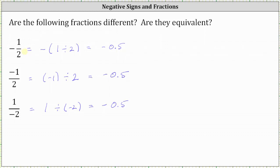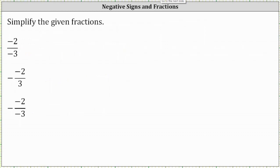Now let's take a look at simplifying some additional fractions with negative signs. First, we have negative 2 over negative 3, which means negative 2 divided by negative 3. We know a negative divided by a negative is equal to a positive, and therefore this simplifies to positive 2 thirds.